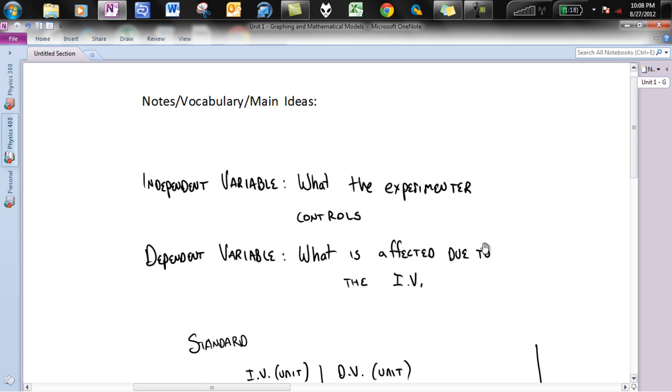Independent variable, what the experimenter controls. This means you have complete control over it. If you want a certain number, let's say, you should be able to call it out and just do it. That is, you are controlling it 100%. You do not have to wait for any other variable to tell you how this is going to work.